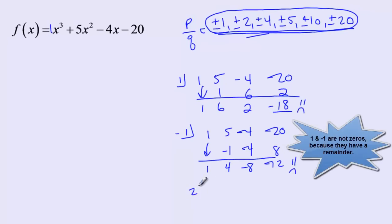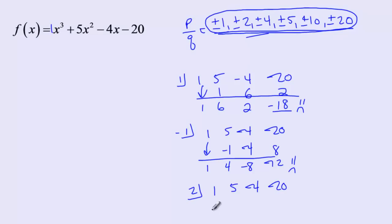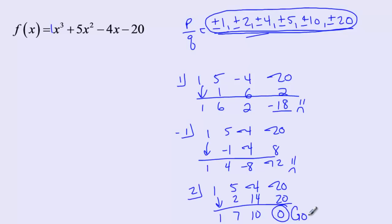Let's try 2. We've got coefficients 1, 5, negative 4, and negative 20. Skip a line, draw a line, bring down the 1. 2 times 1 is 2, that's 7, then 14, then 10, then 20, and we get 0. That's good — we've got a zero, and we know that 2 is a zero.